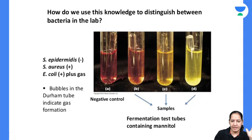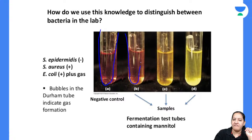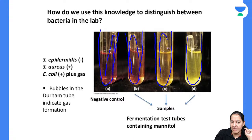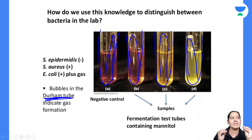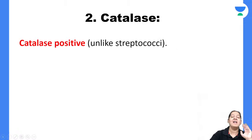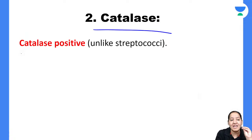In the sugar fermentation test, various sugars are taken in test tubes. When acid is formed, a color change takes place. Inside each test tube there is an inverted Durham tube to check whether gas is formed. If gas is formed, it appears as bubbles in the Durham tube. In Staphylococcus aureus, color change occurs (acid formed) but the Durham tube is empty — no gas is produced.